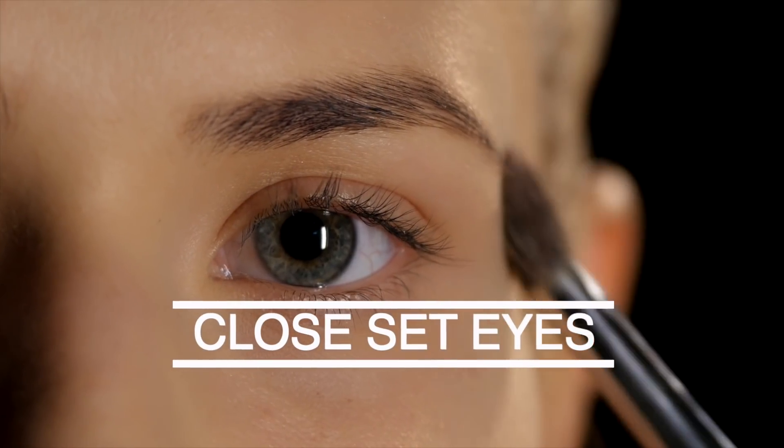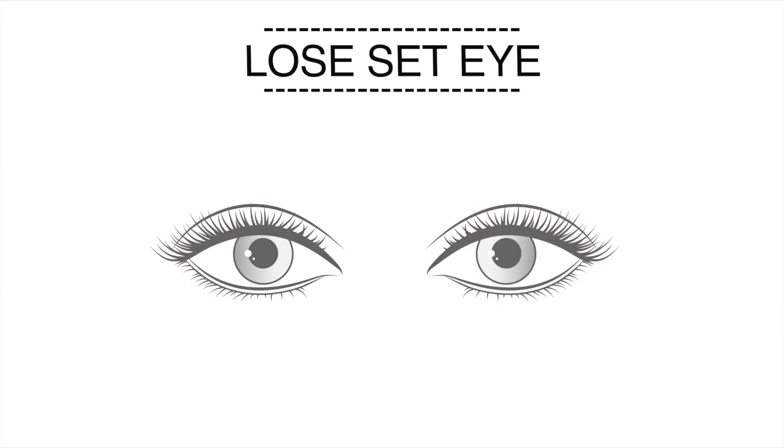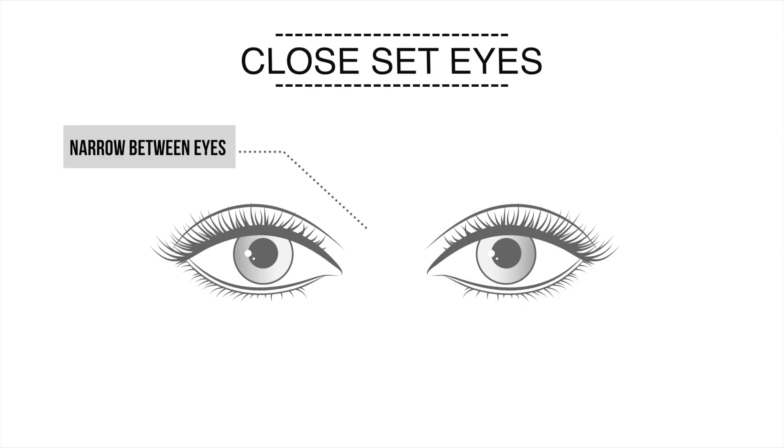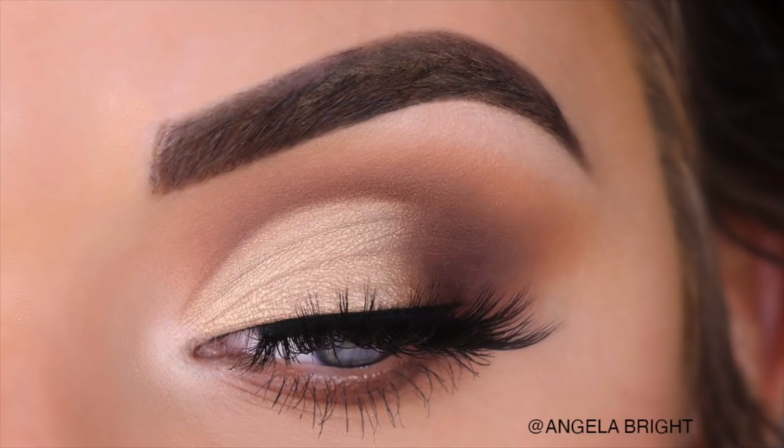Next one we have is close set eyes. Your eyes may be close set if the space between your eyes is narrow — you'll generally have more space from the outer eye to the temple than between each eye. If you have close set eyes, take the light and shimmery shade and put it here on the inner corner. That's going to bring the eyes out a little bit. Don't apply dark colors in here or all over the lid — keep dark color for the outer edge of the eye, and that's going to make the eyes look a little bit further apart, giving them a nice symmetrical balance.